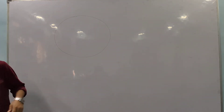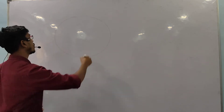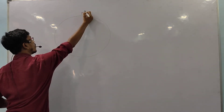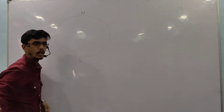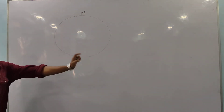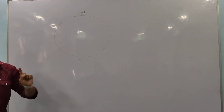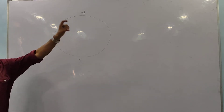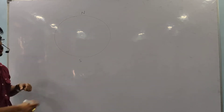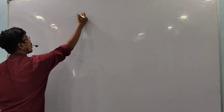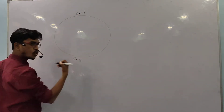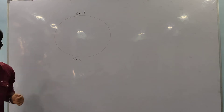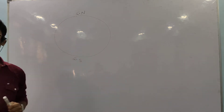This is our Mother Earth. This is the North Pole of the Earth and this is the South Pole of the Earth. What is the geographical North or geographical South? This is geographical North and this is geographical South.